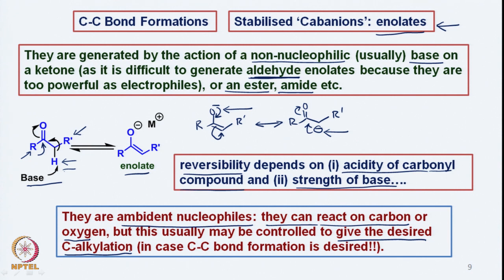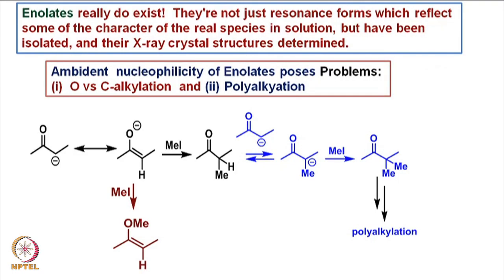Enolates really do exist — they are not just resonance forms reflecting some character of the real species in solution. They have actually been isolated and their X-ray crystal structures determined. Both the carbanion and the enolate ion show nucleophilic character and are therefore ambident nucleophiles. One leads to C-alkylation and the other leads to O-alkylation.